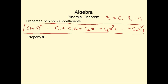Now let's go to property number 2. In property number 2, we differentiate this equation here on both sides, and then substitute values for x. Unlike in property number 1, where we actually substitute the value for x directly, here we differentiate both sides and then substitute the value for x, like 0, 1, or 2. So let's differentiate both sides.